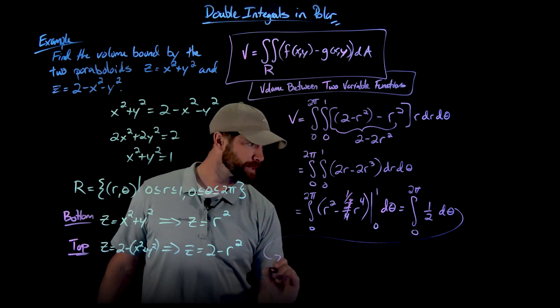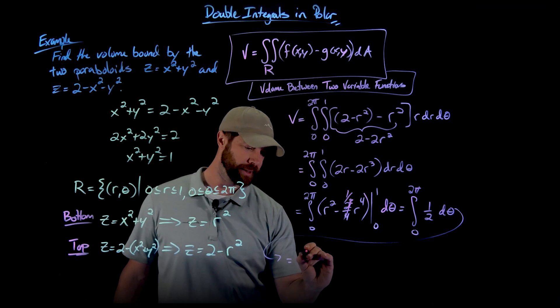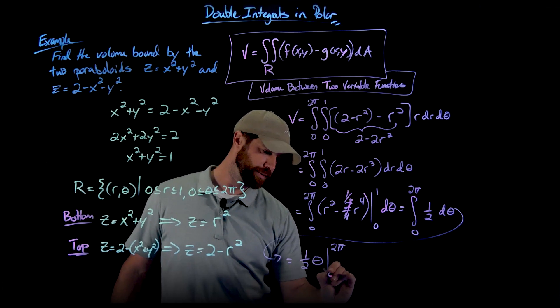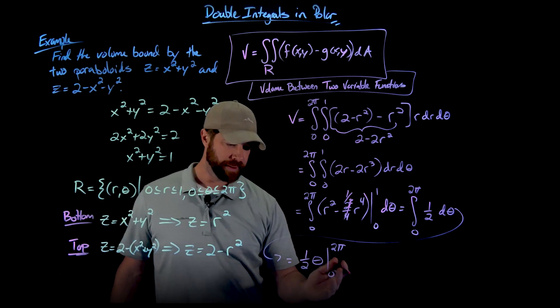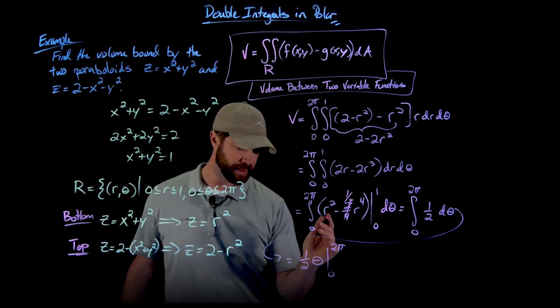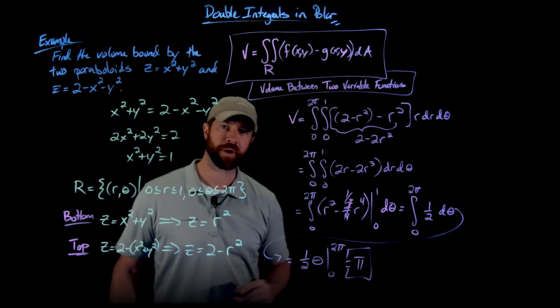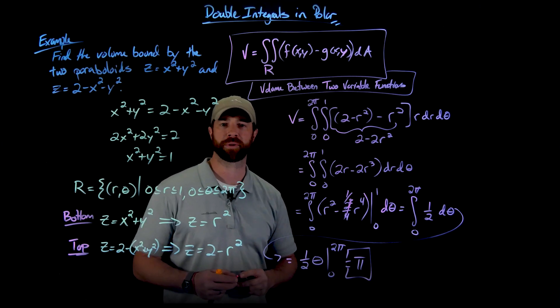And so if we finish this calculation, what we're going to get is 1 half theta evaluated from 0 to 2 pi. The 0 does nothing. When we put 2 pi in here, we're going to end up just with pi as the volume bound between these two paraboloids.